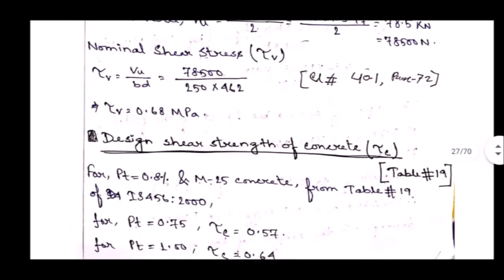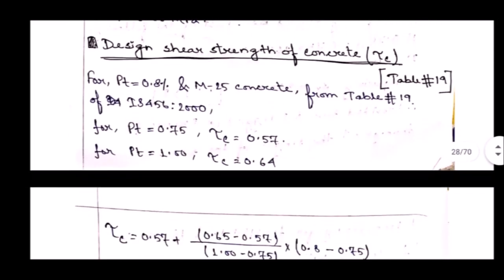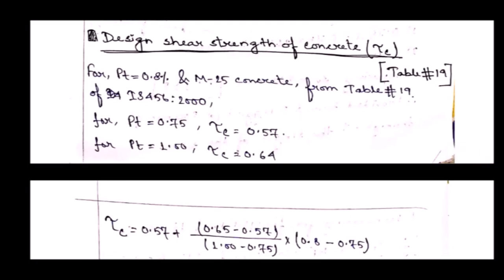Now we find the design shear strength of concrete. Concrete also takes some shear, but the excess shear must be carried by reinforcement. To find how much shear concrete can carry, we go to IS code table number 19, which gives the design shear strength Tau_C in N/mm² (MPa).